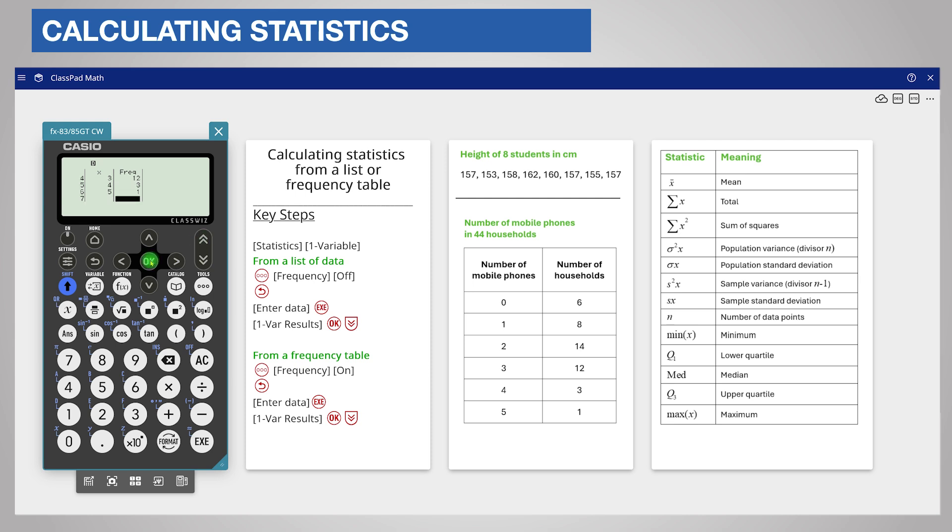Press OK after entering the last item and choose One Variable Results. The summary statistics are displayed in the same way as for a list. I hope that this will help you calculate summary statistics such as mean and quartiles from either a list of data or a frequency table.